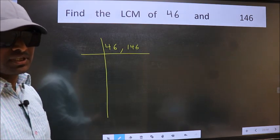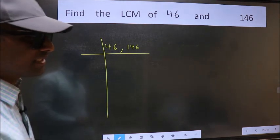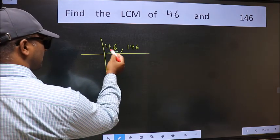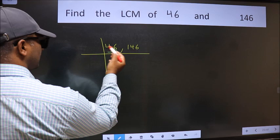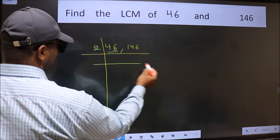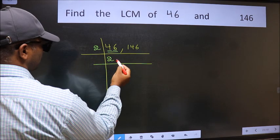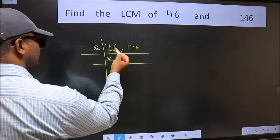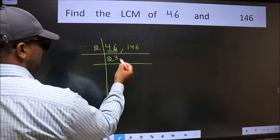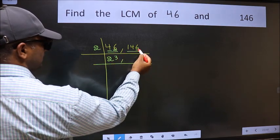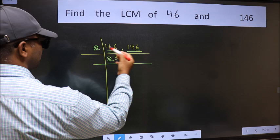Now focus on the first number which is 46 here. In this number, last digit is 6, even, so take 2. First number 4, when do we get 4 in 2 table? 2×2 is 4. The other number 6, when do we get 6 in 2 table? 2×3 is 6. The other number 146, last digit 6, even, so this number is divisible by 2.